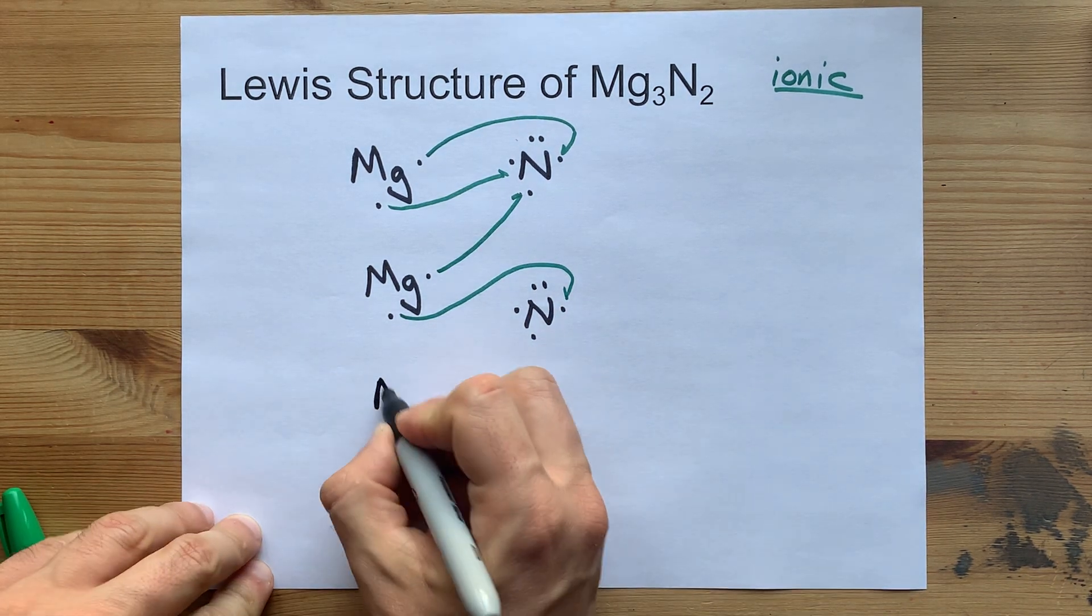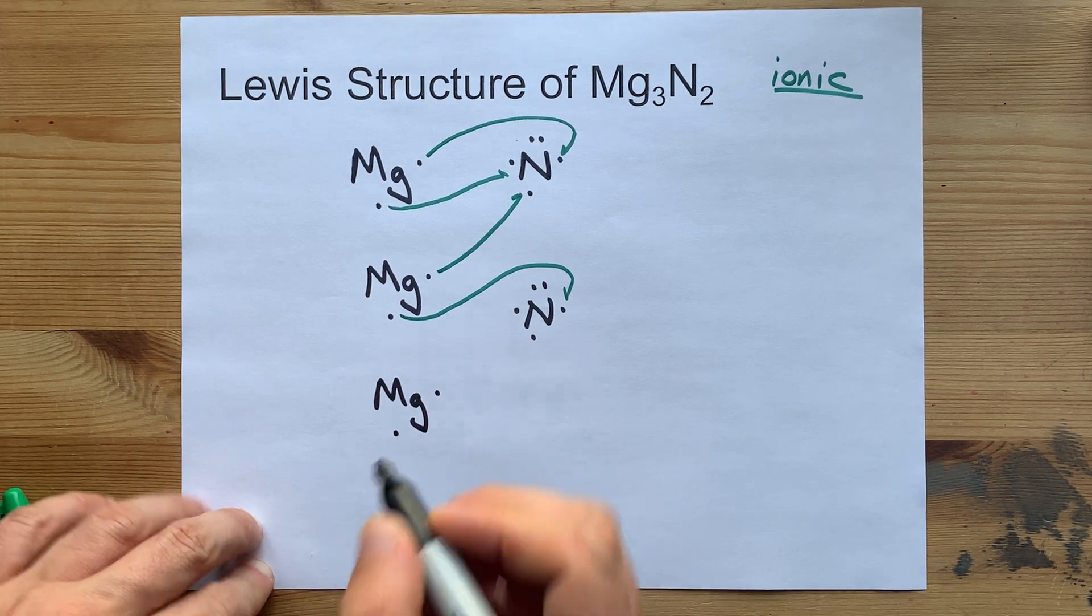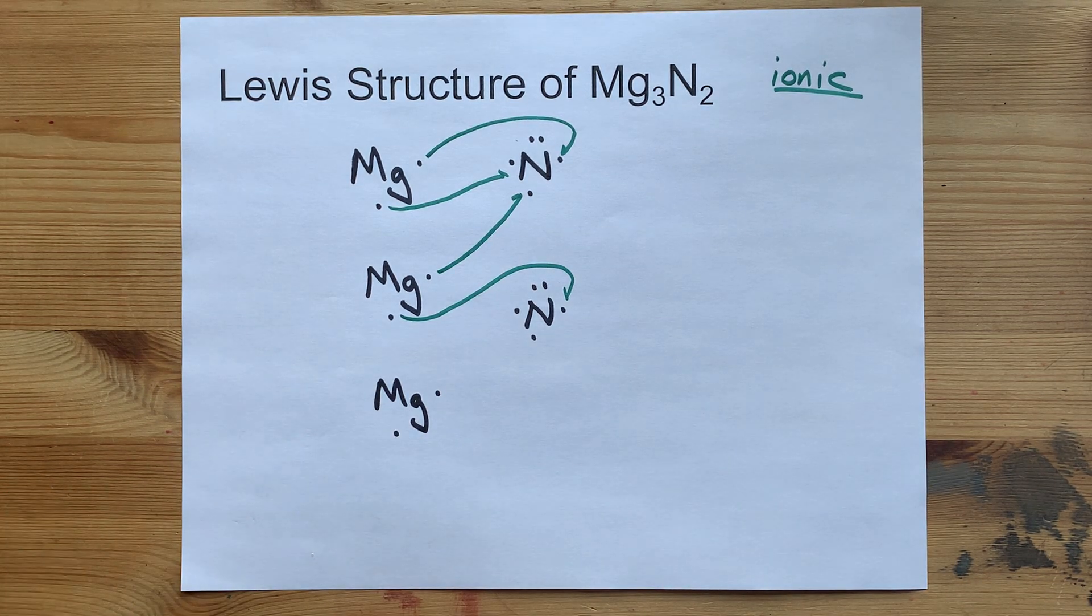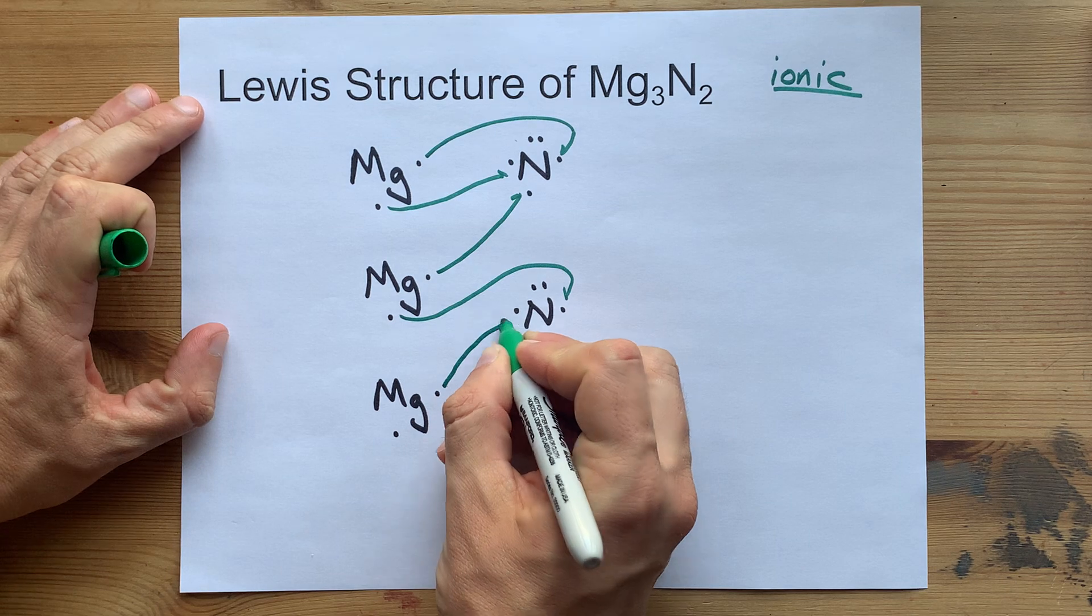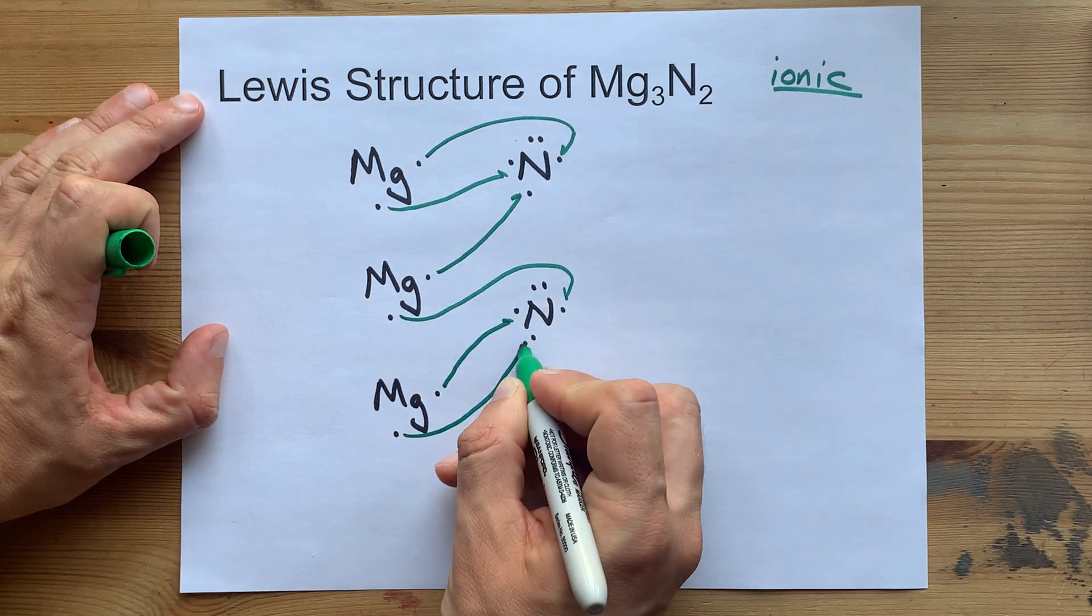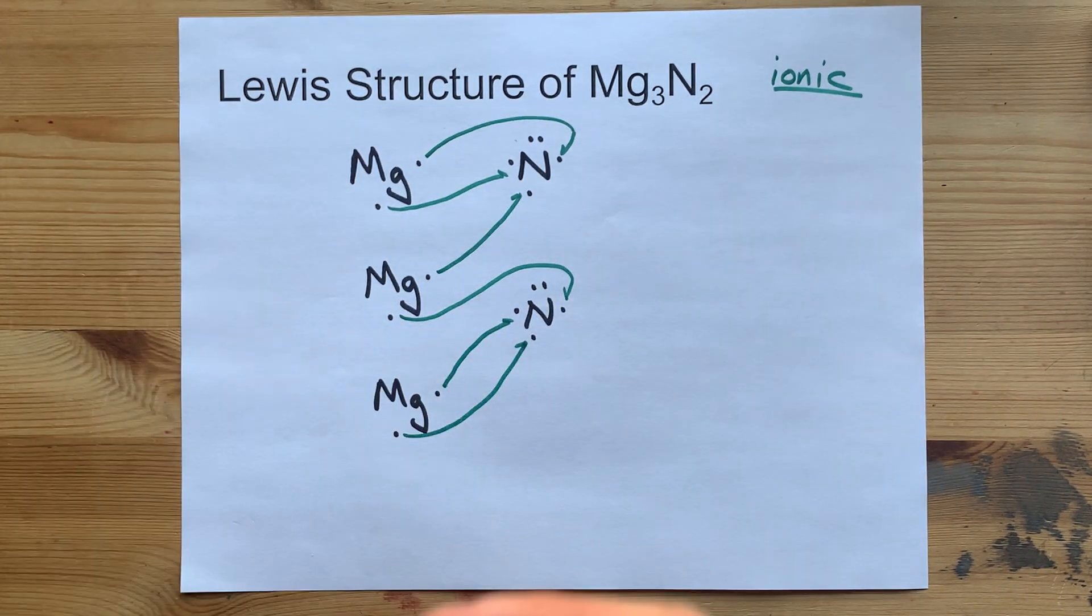But this is where the train comes to a stop. Magnesium brings 2 each, so it can give 1 electron away here, give the other electron away here, and now everyone's happy.